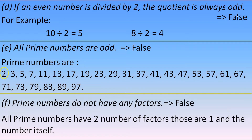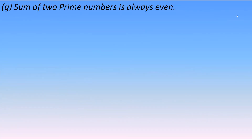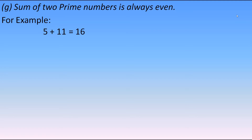Next statement: the sum of two prime numbers is always even. Taking 5 and 11 — their sum is 16, which is even. But taking 2 and 3 — their sum is 5, which is odd. So the answer may be even or odd. Therefore the statement is false.